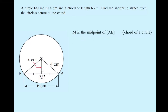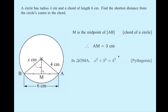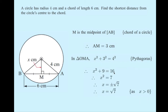We can state that M is the midpoint of chord AB — because of the chord in a circle theorem. Therefore AM equals three. In triangle OMA, we can write: X² + 3² = 4². That's our reason: Pythagorean theorem. Then X² + 9 = 16, so X² = 7. Taking the square root on both sides, X equals plus or minus root of seven. But we cannot have a negative length, so X equals √7. We only take the positive answer, because X must be greater than zero.